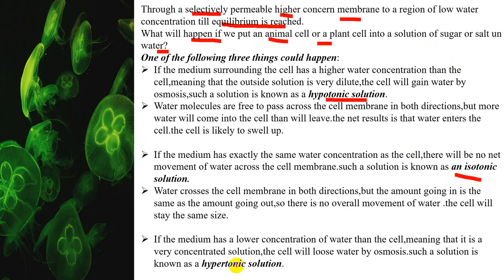There are three types of solutions: hypotonic solution, isotonic solution, and hypertonic solution. In a hypotonic solution, the water content outside is more, meaning the outside solution is very dilute. The cell will gain water by osmosis and is likely to swell up. Water molecules are free to pass across the cell membrane in both directions, but more water will come into the cell than leave, so the net result is that water enters and the cell swells up.